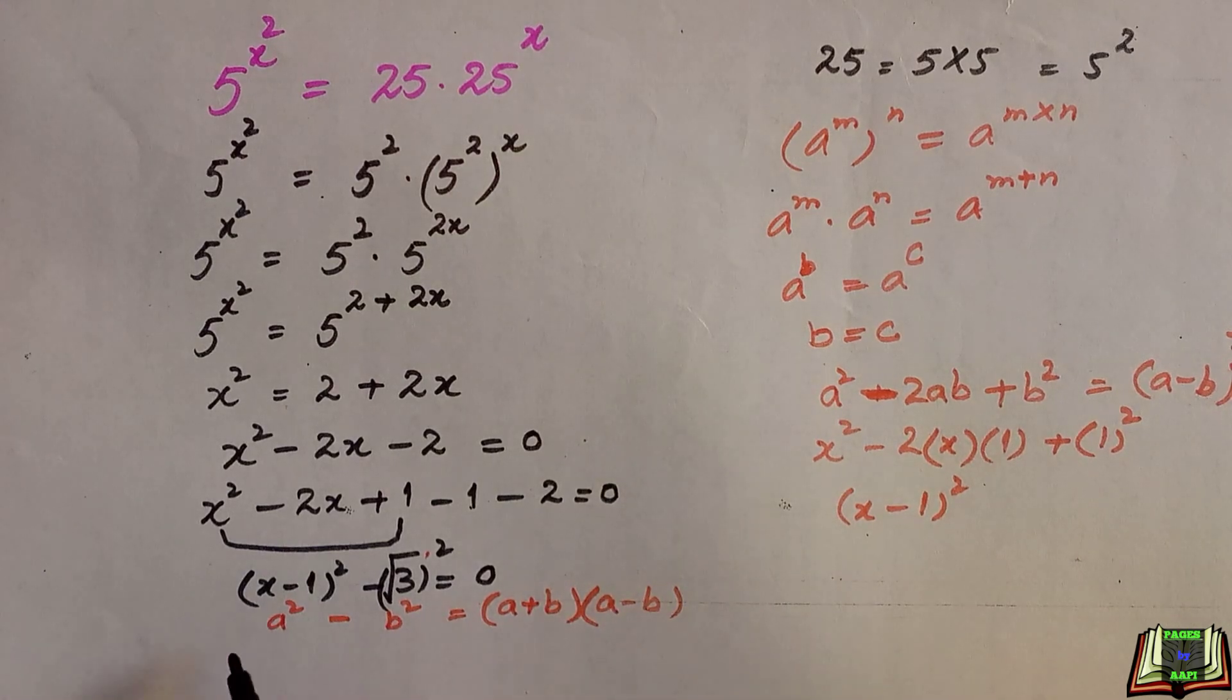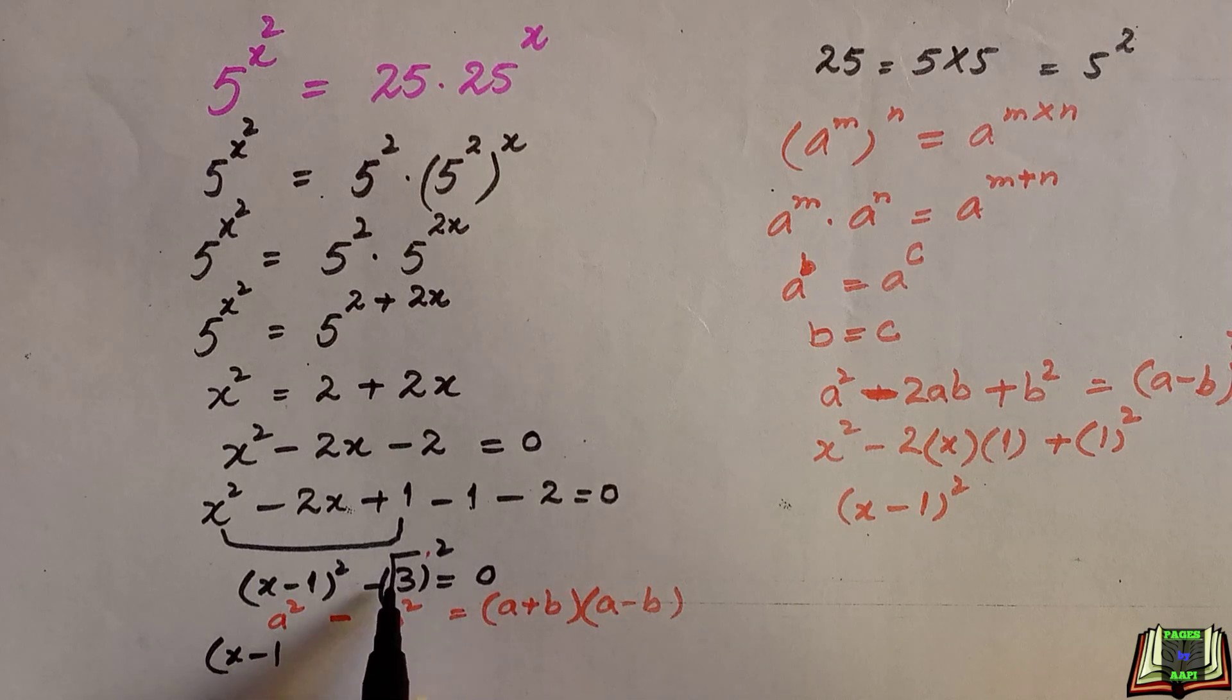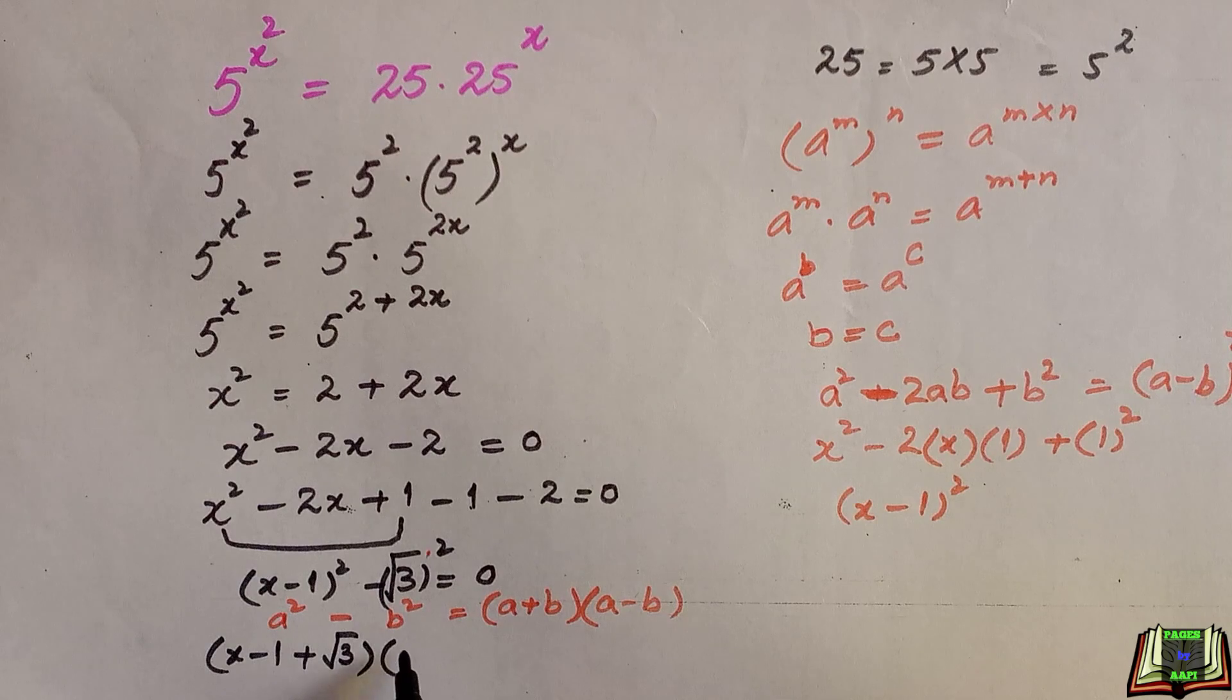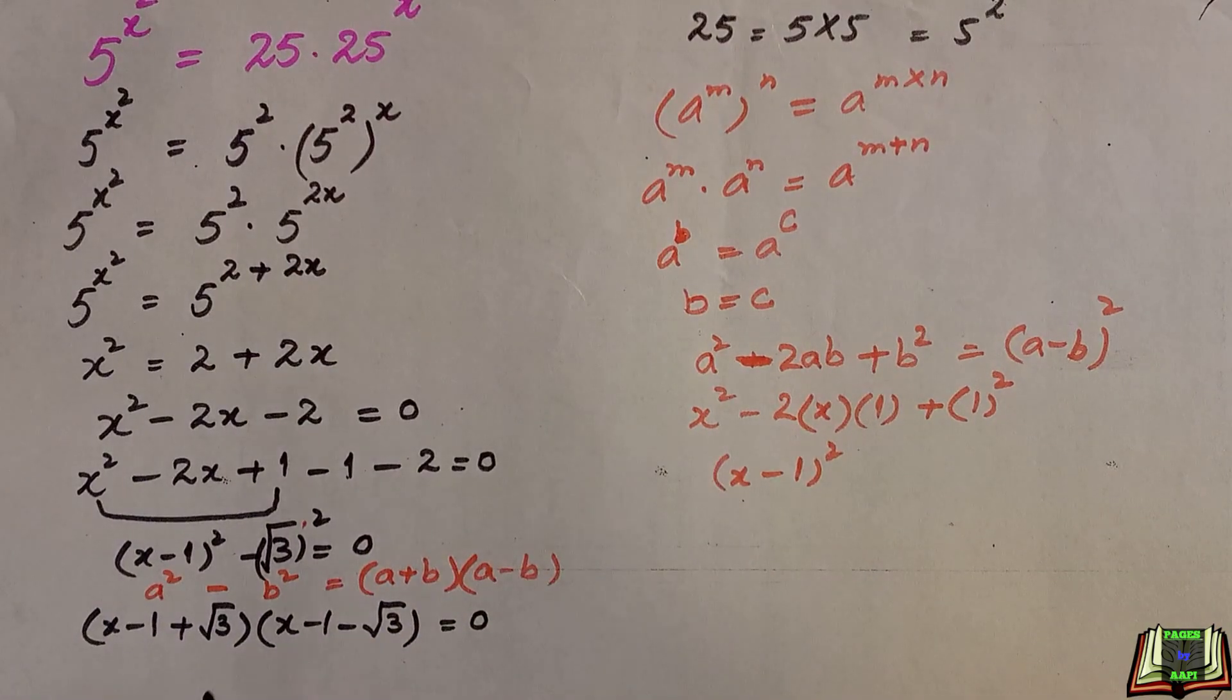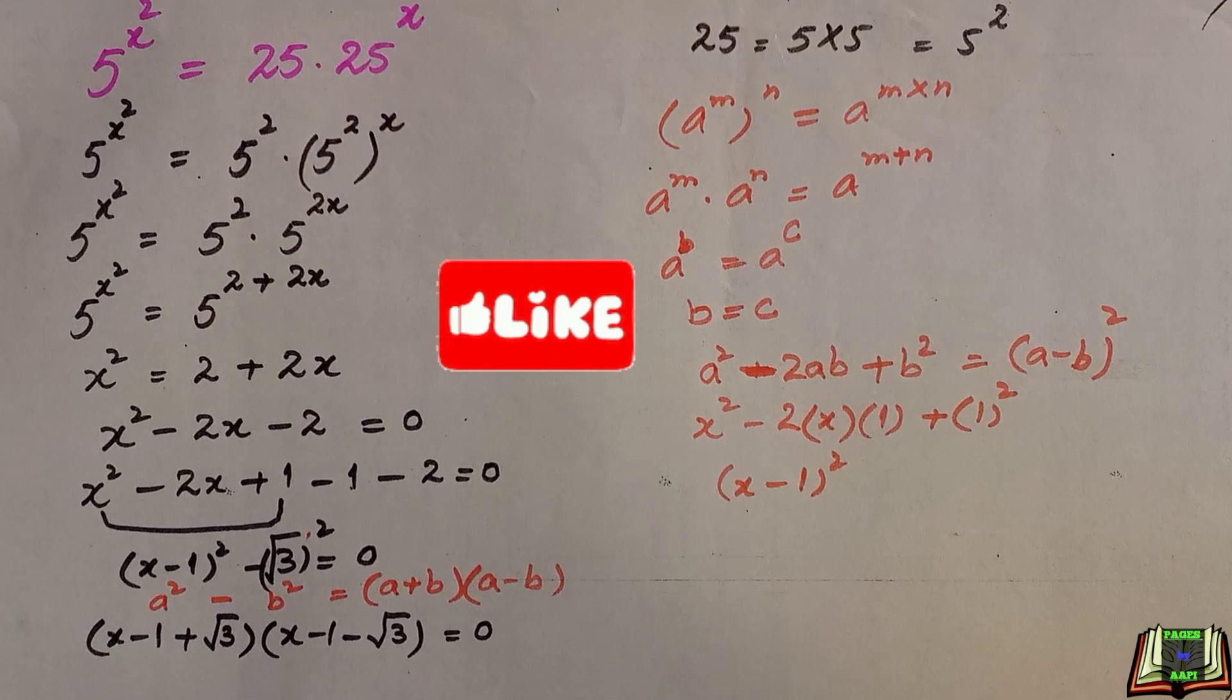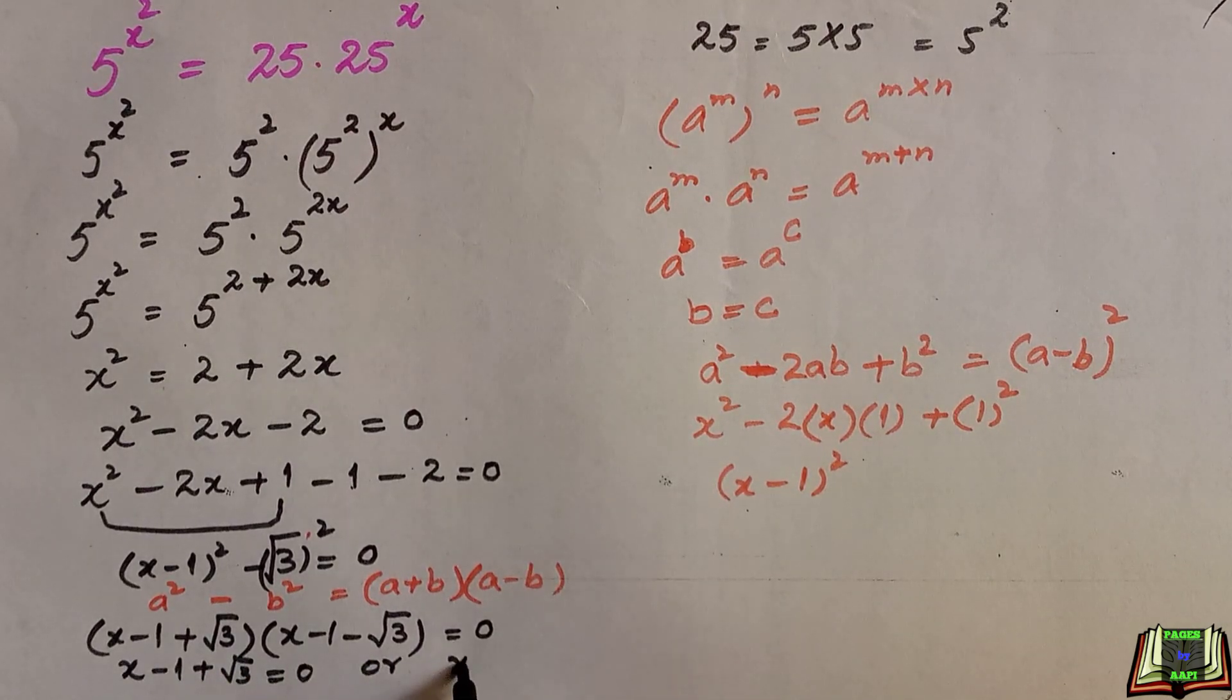So from this, x minus 1 plus root 3 times x minus 1 minus root 3 is equal to 0. It means that either x minus 1 plus root 3 is equal to 0, or x minus 1 minus root 3 is equal to 0.